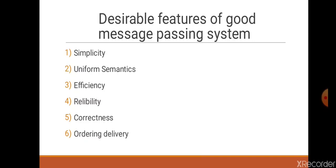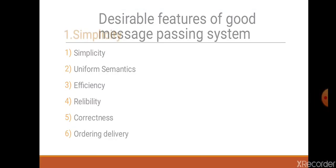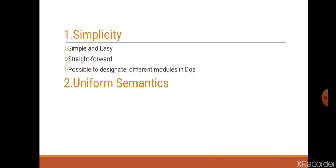Let's see each and every feature in detail. First is simplicity. A message passing system is simple and easy to use. It is straightforward for constructing new applications and to communicate with existing ones. Here it is also possible for programmers to designate different modules of the distributed operating system.